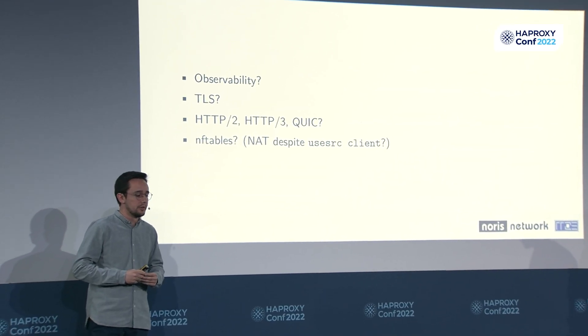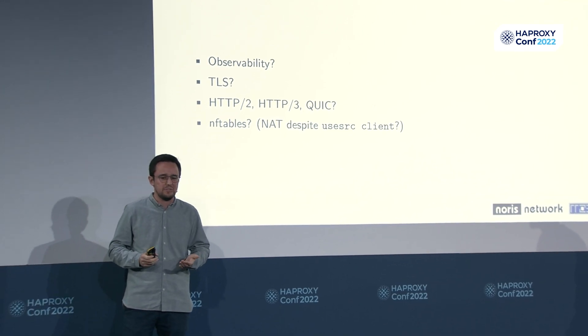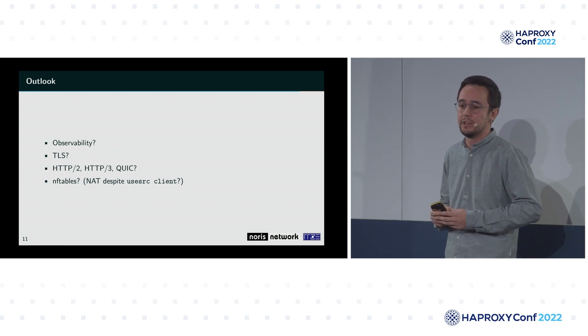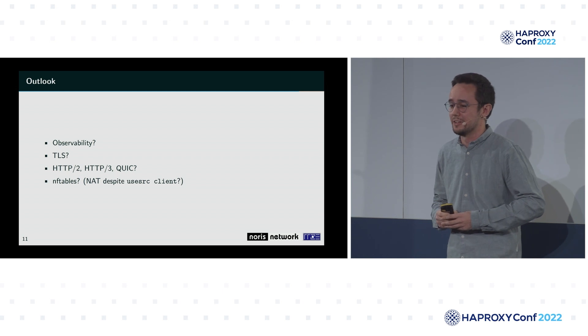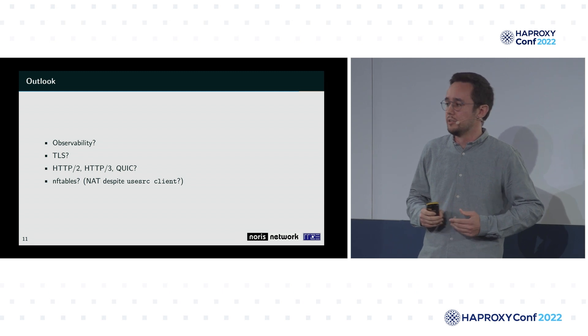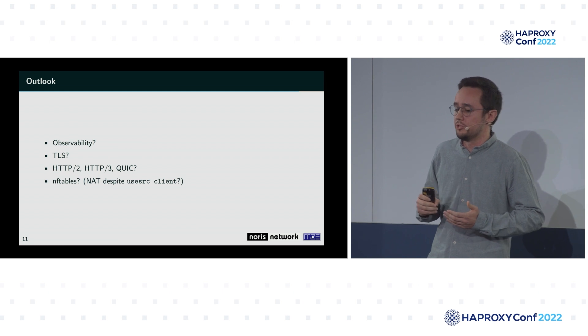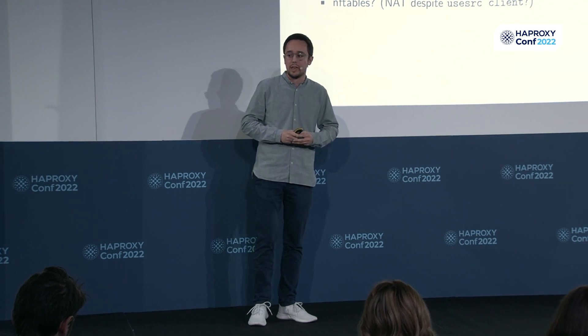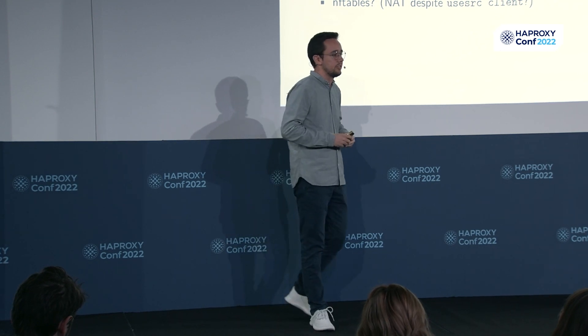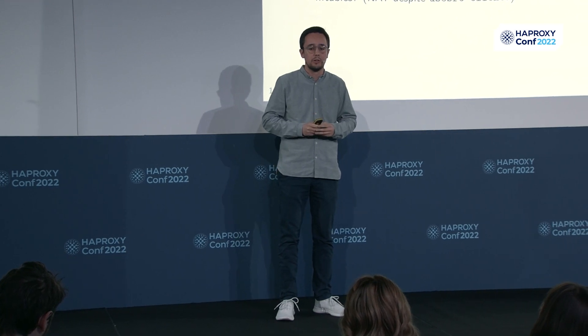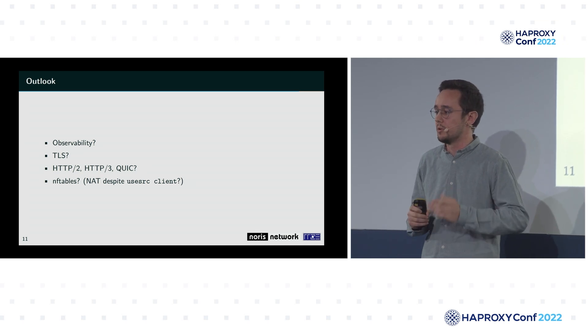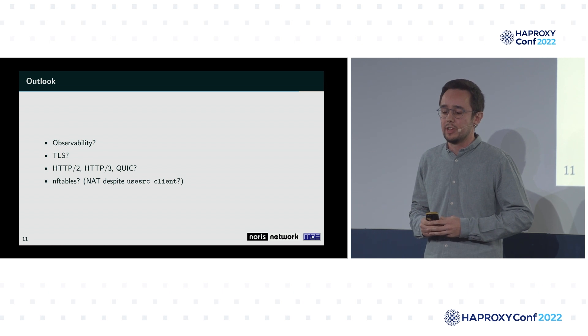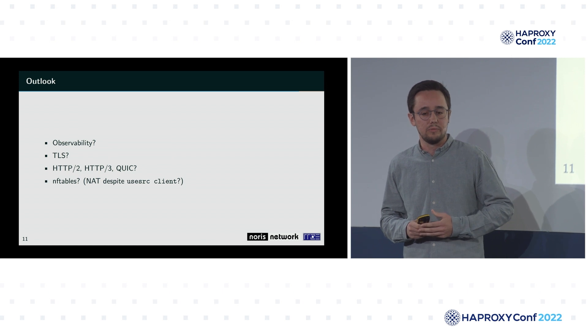Finally, let's talk about what we could do in the future. We really lack observability — we don't have any traffic numbers right now, so we probably should get some. Another idea is using TLS for CTF services, which we don't currently do. In that case, HAProxy could also help us introspect traffic. That would also be the foundation for more advanced protocols like HTTP/2 or HTTP/3 with QUIC. Finally, there's the idea to use nftables instead of iptables, which might allow us to be more flexible and solve the problem with traffic not showing up in the right iptables table.